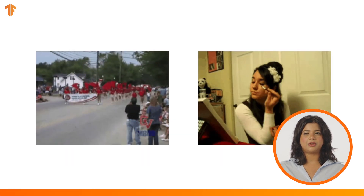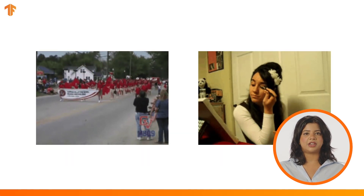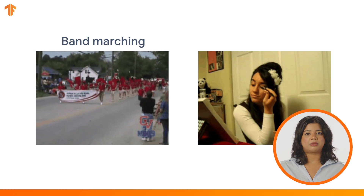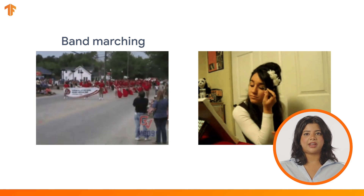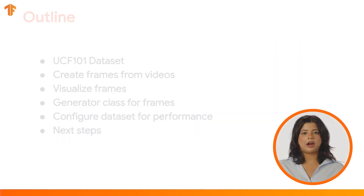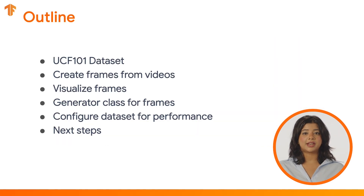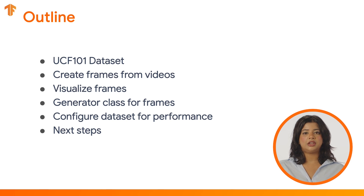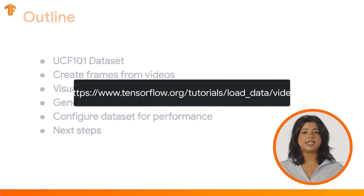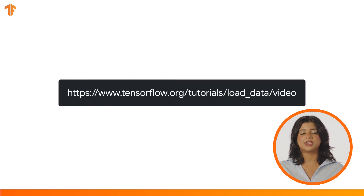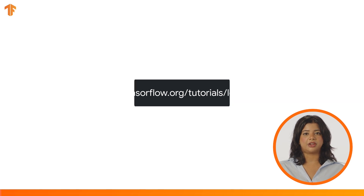For example, on the left you'd classify this video as band marching, and on the right you'd classify it as apply eye makeup. I'll outline the dataset you'll use, how to create frames from videos, how to visualize those frames, and how to configure the dataset for performance. You can find complete details on all these steps in the associated tutorial. Here I'll cover the key ideas for you.